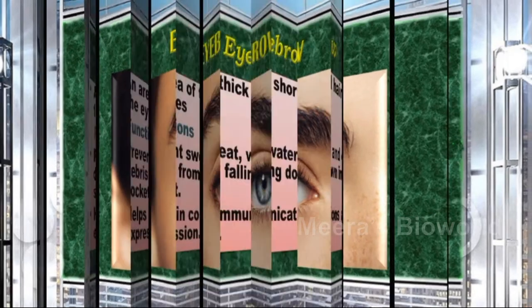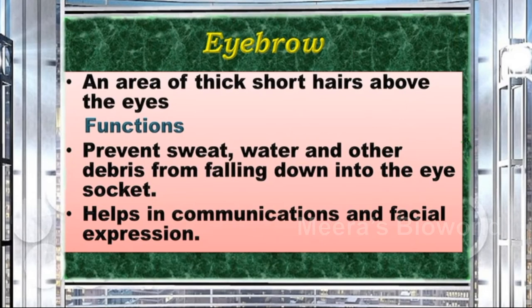Eyebrows are an area of thick short hairs above the eyes. Their functions include preventing sweat, water, and other debris from falling down into the eye socket. They also help in communication and facial expression.